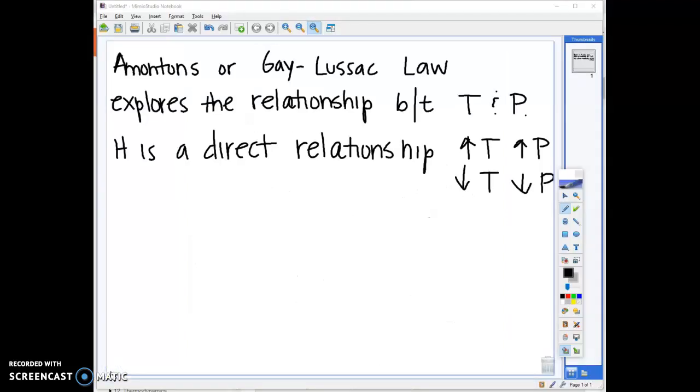The first law that we'll explore is Amonton's or the Gay-Lussac law. This is listed on your cheat sheet as Gay-Lussac's law, as he is the one who really identified the relationship between temperature and pressure more precisely. So this law looks at the variables of temperature and pressure, and Gay-Lussac determined that it is what we refer to as a direct relationship, which means what one does the other one does. So if we increase temperature we increase pressure, if we decrease temperature we decrease pressure.